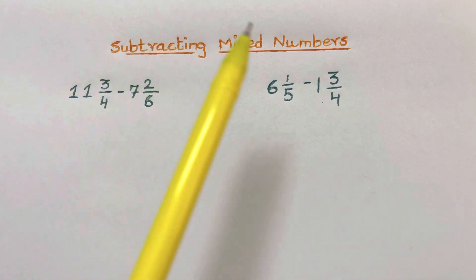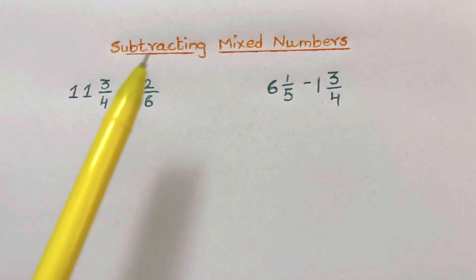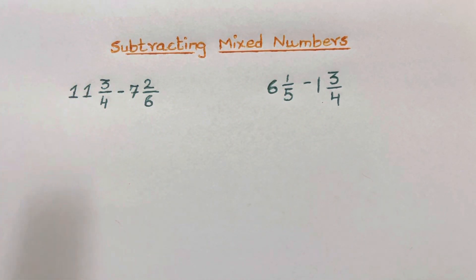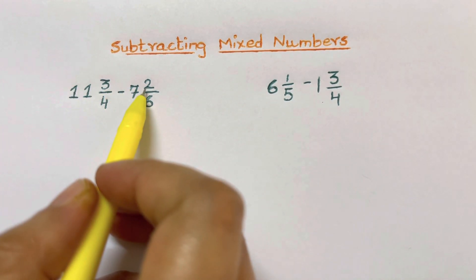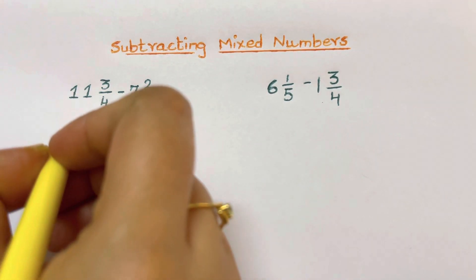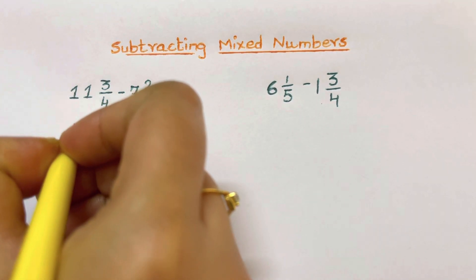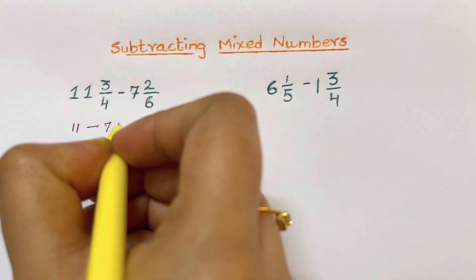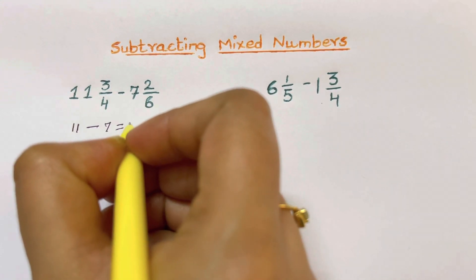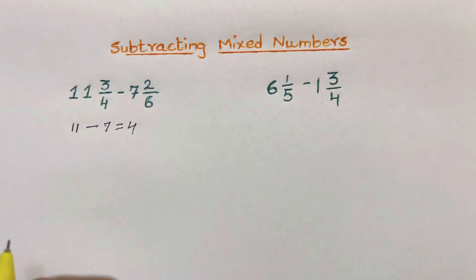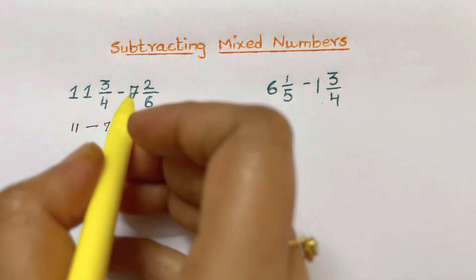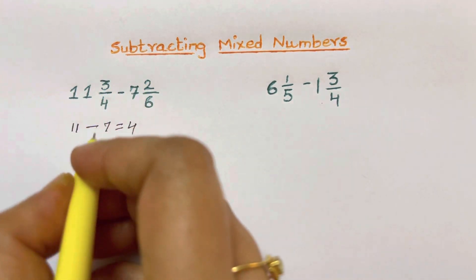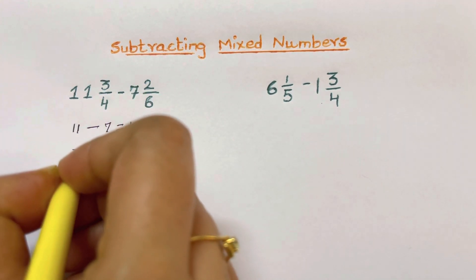Here I have taken two examples. In the first example, we subtract the whole numbers first, that is 11 minus 7, which will give you 4. Now we are going to subtract the fractions: 3 over 4 minus 2 over 6.